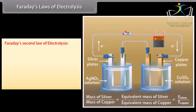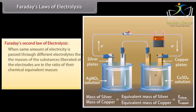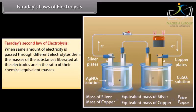Faraday's second law of electrolysis. When same amount of electricity is passed through different electrolytes, then the masses of the substances liberated at the electrodes are in the ratio of their chemical equivalent masses.